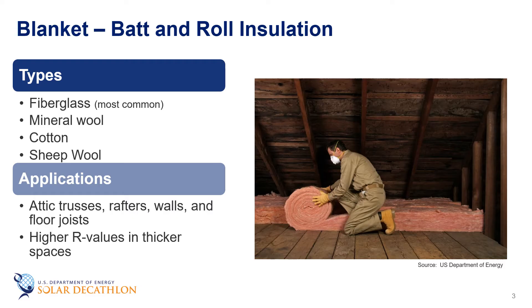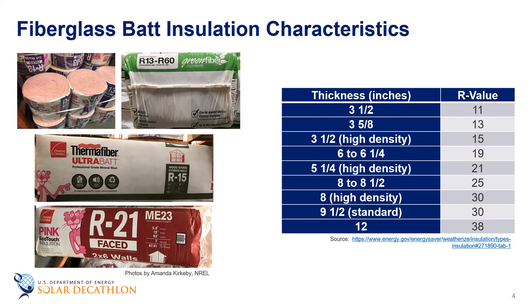First, let's look at blanket insulation, the most common and widely available type of insulation. It comes in the form of batts or rolls, and it consists of flexible fibers, most commonly fiberglass. You'll also find batts and rolls made out of mineral wool, plastic fiber, and natural fibers such as cotton and sheep's wool. Batts and rolls are available in widths suited to standard spacing of wall studs, attic trusses or rafters, and floor joists. These products are available with or without facings. Batts are designed for 2x4 and 2x6 walls with different R-values depending on the product density, and can achieve higher R-values in thicker spaces. On the screen, you can see more information and some example photos of this type of insulation.